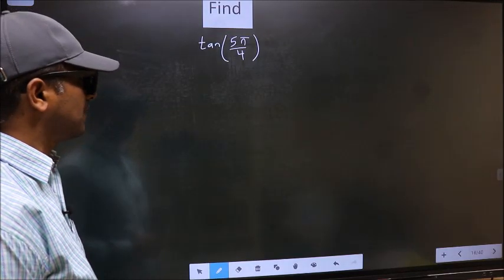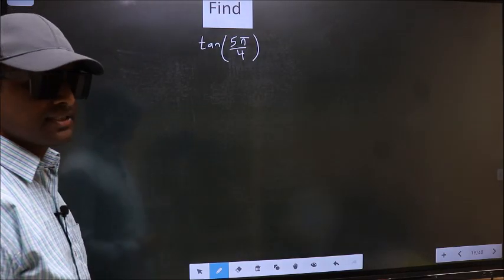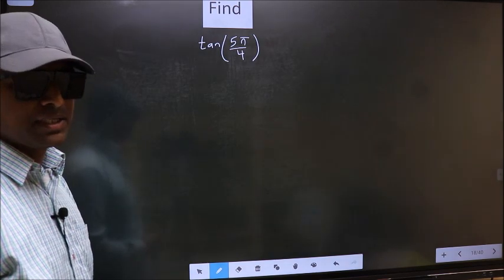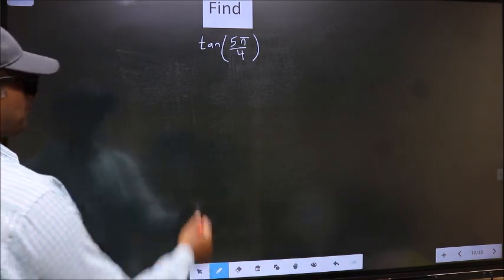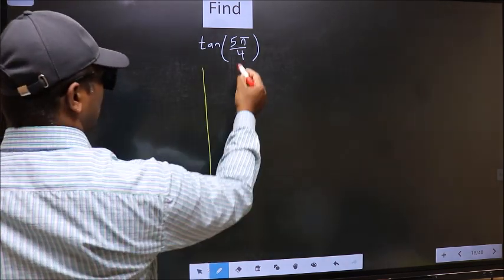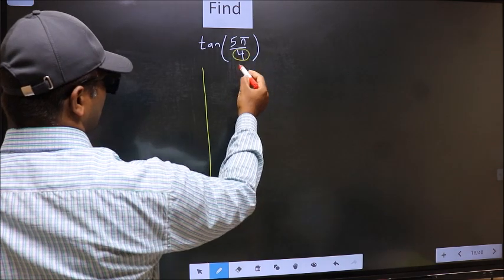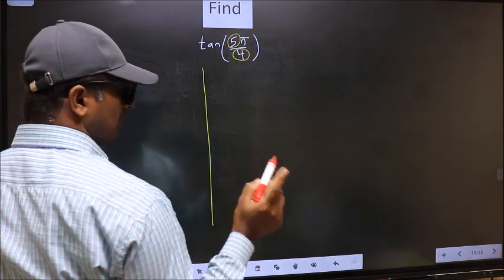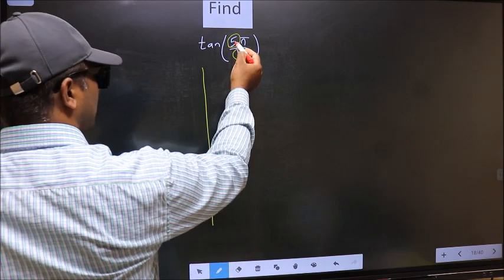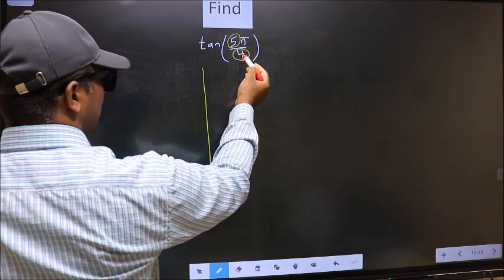Find tan(5π/4). To find this, we should follow method C. In the denominator, we have 4; in the numerator, 5. Now you should check: 5 is close to which multiple of 4?